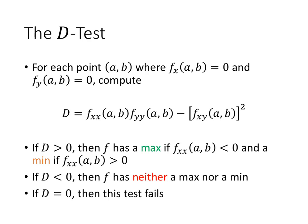The test we use is called the D-test. For potential points where both first-order partial derivatives equal zero, we compute a value D involving second-order partial derivatives. We plug the potential point into f_xx, f_yy, and f_xy, and compute D equals f_xx times f_yy minus f_xy squared.